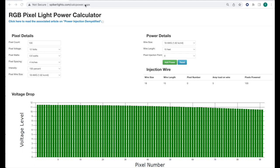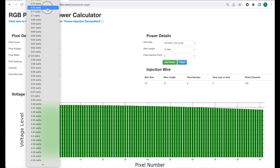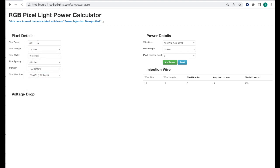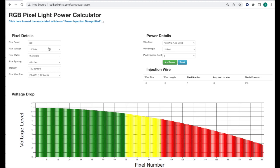I've opened up the calculator with the default settings. I'm going to update the pixel watts to 0.72, pixel wire size to 20 gauge, set the pixel count to 200. And as you notice around 110 pixels, the graph becomes red, which indicates significant voltage drop and where power injection is needed.